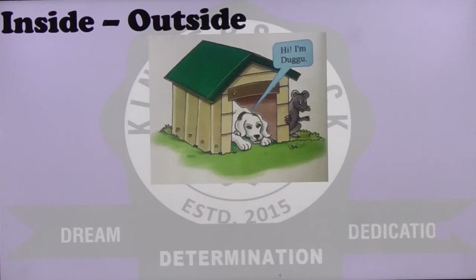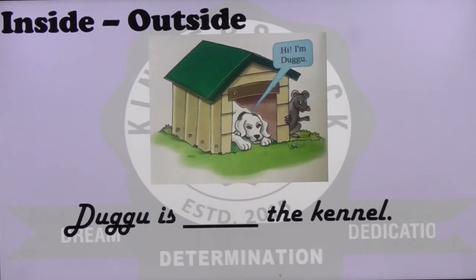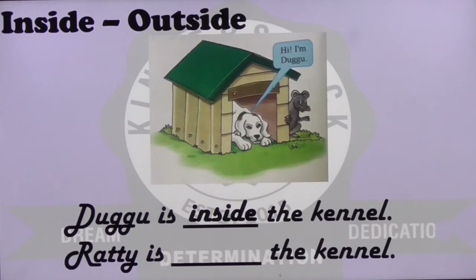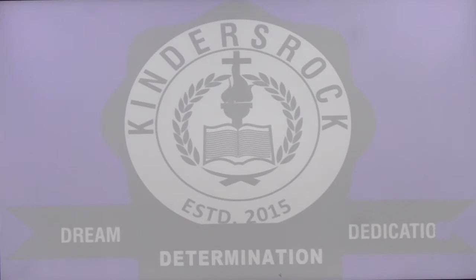Inside and outside: there we have the picture and we have a dog here. His name is Dooku. Ratty is standing outside the house of the dog. A dog house is called a kennel. So Dooku is inside the kennel and Ratty is outside the kennel.